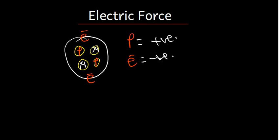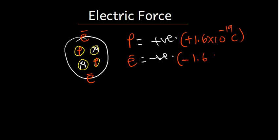Protons are positively charged and electrons are negatively charged. These two charges have specific values — they have the same magnitude but opposite signs. The proton has a charge of positive 1.6 times 10 to the power negative 19 coulombs. The SI unit of charge is the coulomb. The electron has a charge of negative 1.6 times 10 to the power negative 19 coulombs.